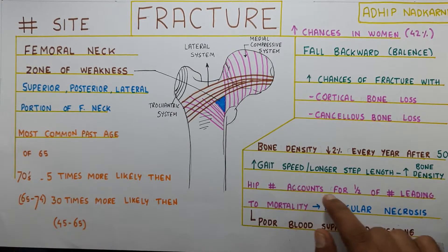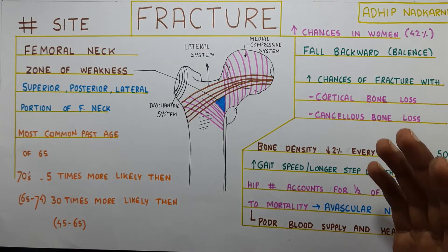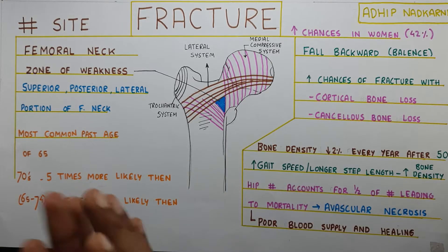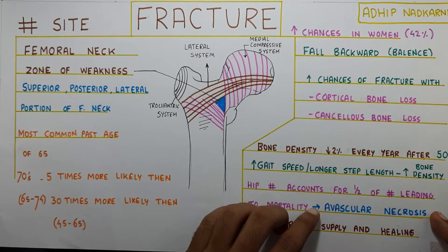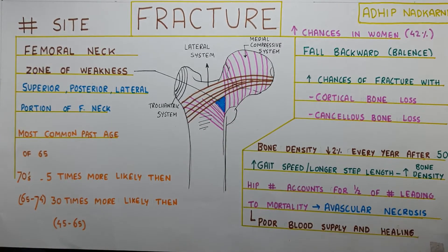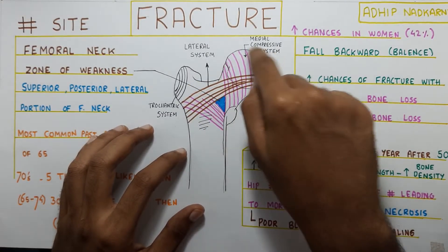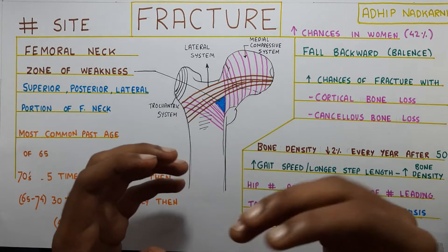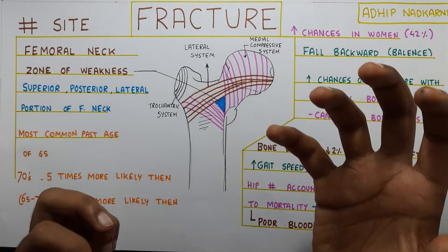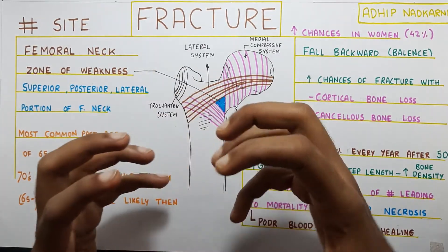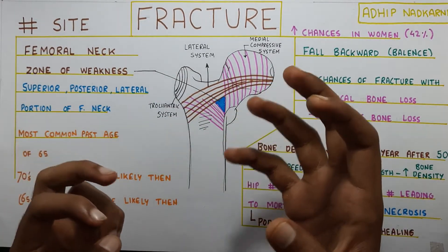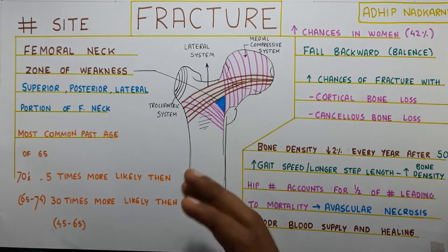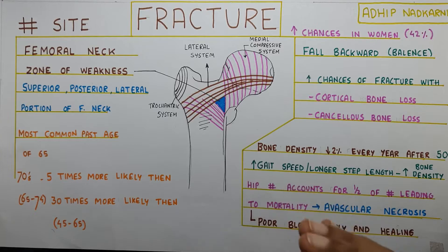Hip fracture accounts for about half of the fractures that lead to mortality. A major reason for this is avascular necrosis — a hip fracture puts the patient in a very sedentary state. Avascular necrosis happens because of the poor blood supply at the neck of the femur and poor healing. The neck and head of the femur are inside the capsule, surrounded by synovial fluid, so when there is a fracture there, healing is impeded by the synovial fluid and the blood supply is not adequate. Considering that the neck is the only part supporting the head of the femur and the whole shaft, all these reasons combined create a very unsupportive condition for healing, which is why avascular necrosis is commonly seen at this site.